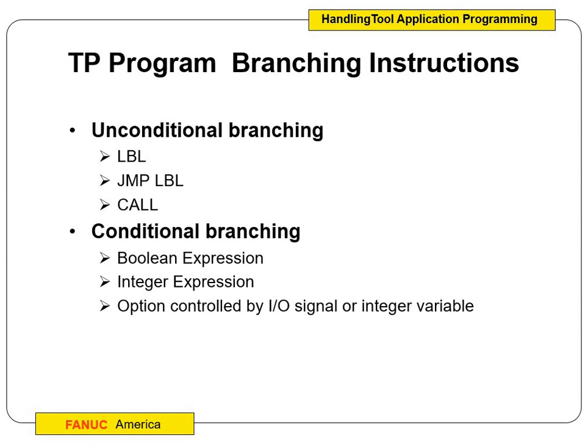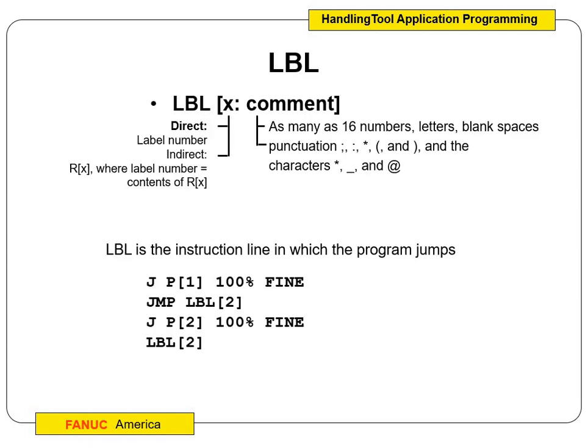We can also do conditional branching, which uses a Boolean expression. For example, if this variable equals this value, do this task; or if this variable equals something else, select a different task. That's the key difference: unconditional branching loops through the program, while conditional branching sets behavior based on input/output parameters or integer parameters.